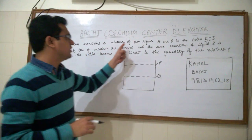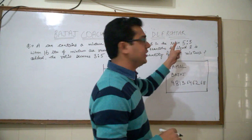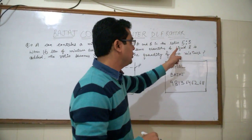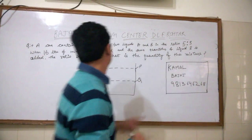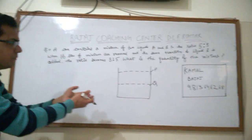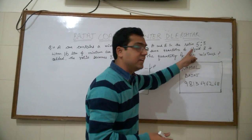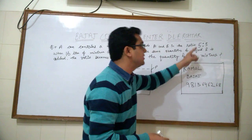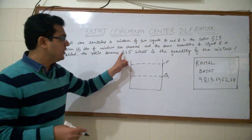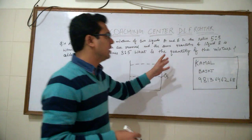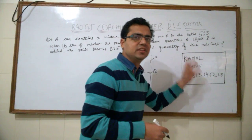So the question is, a can contains a mixture of two liquids A and B in the ratio of 5 is to 3. When 16 litres of the mixture are removed and the same quantity of liquid B is added, this is very important, liquid B is added and the ratio becomes 3 is to 5. What is the quantity of the mixture in this vessel?